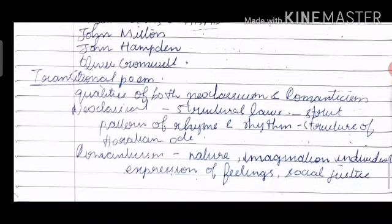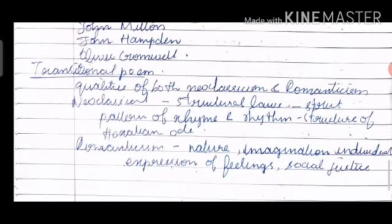Let us analyze it as a transitional poem. The elegy has qualities of both neoclassicism and romanticism. Neoclassicism insisted on structural laws, strict patterns of rhyme and rhythm, and therefore this elegy is written in the structure of the Horatian ode. Romanticism was a movement which eulogized nature, imagination, individual expression of feelings, and social justice.